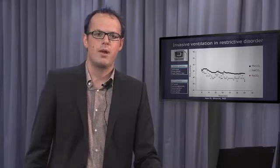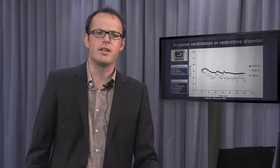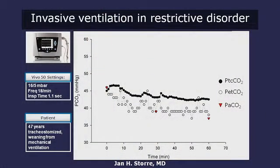A second example shows a patient again tracheostomized and on invasive mechanical ventilation, but this patient suffers only from respiratory pump failure due to a restrictive disorder. We monitored this patient over 60 minutes with transcutaneous CO2, end-tidal CO2, and three arterial blood gas analyses represented by triangles. As you can see in the graph, there is a very good correlation between both non-invasive techniques for monitoring carbon dioxide, with nearly no differences to the gold standard arterial blood gas analysis, mostly due to the healthy lung and homogeneous air distribution.